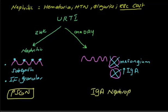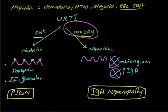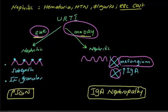This distinction is very important because people often focus on the upper respiratory tract infection but miss the timing. The time is critical: if the nephritic presentation — hematuria, hypertension, oliguria — appears within one day, it is a mesangial problem, which is IgA nephropathy. If it appears after two weeks, it is a sub-epithelial problem, which is post-streptococcal glomerulonephritis.